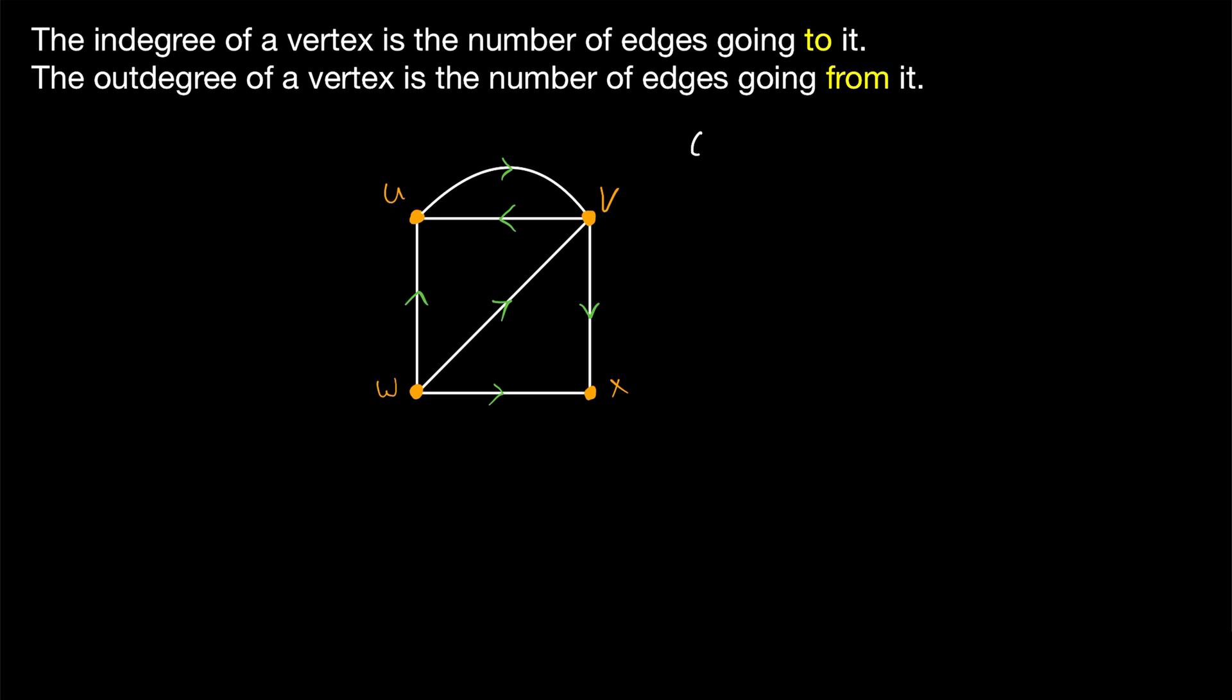Remember how in a normal graph, edges are defined as two element subsets of the vertex set. But of course, for digraphs, this is not sufficient. Since, for example, this directed edge here isn't just an edge between U and W, it's an edge from W to U. And a two element subset of the vertex set can't capture that because sets don't have order.